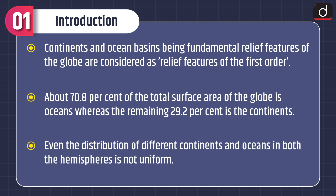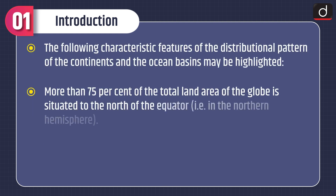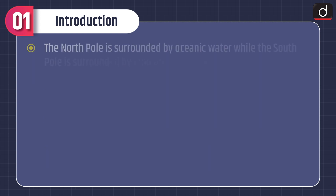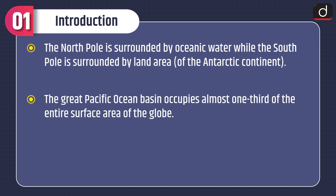Continents and ocean basins, being fundamental relief features of the globe, are considered relief features of the first order. About 70.8% of the total surface area of the globe is oceans, whereas the remaining 29.2% is the continents. The distribution of different continents and oceans in both hemispheres is not uniform. More than 75% of the total land area is situated to the north of the equator, i.e. in the northern hemisphere. Contrary to this, water bodies dominate in the southern hemisphere. The north pole is surrounded by oceanic water, while the south pole is surrounded by the land area of the Antarctic continent. The great Pacific Ocean basin occupies almost one-third of the entire surface area of the globe.